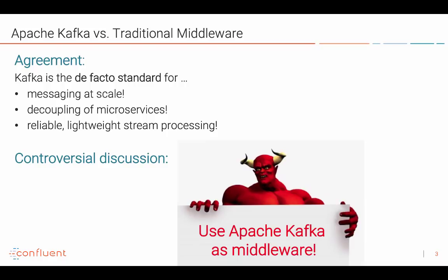Apache Kafka versus traditional middleware is a discussion I see every week. We agree that Kafka is the de facto standard for messaging at scale, for processing millions of messages, often also for building a microservice architecture where you decouple different producers and consumers from each other. Everybody knows that Kafka is a reliable, lightweight stream processing engine. But the key question is: is Apache Kafka the right tool for middleware, for building a modern integration layer, and how does this compare to products you already have, like an ESB or ETL tool?